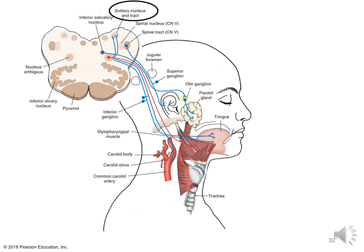The solitary nucleus and tract can be seen in the medulla oblongata. Structures like the esophagus and trachea are near each other — the esophagus would be posterior to the trachea. All visceral sensory information from cranial nerves 5, 7, 9, and 10 ultimately reaches the solitary nucleus for processing to maintain homeostasis.